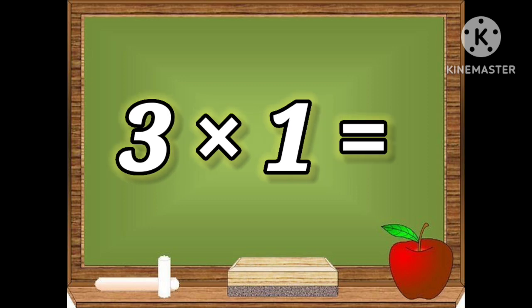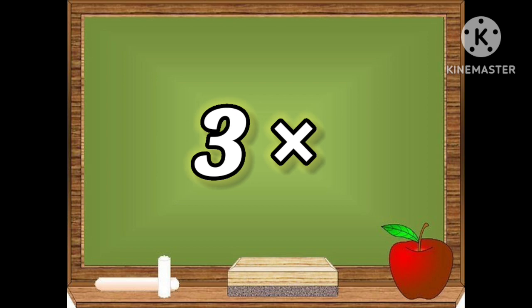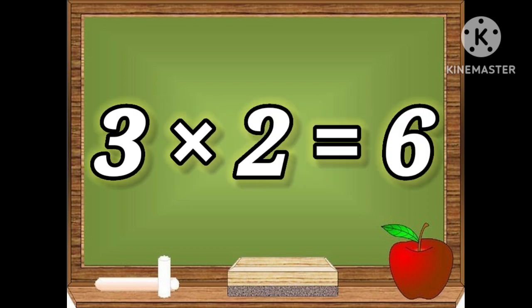Three ones are three. Three twos are six.